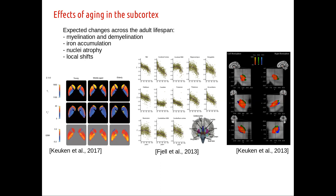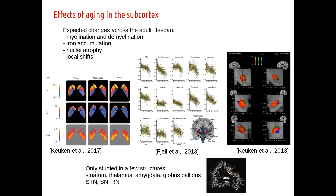From previous studies by our group and others, we know there is active myelination and demyelination across the adult lifespan, iron accumulation particularly important for neurodegenerative diseases, nuclei atrophy with cell death, and — starting with Max Keuken's 2013 paper — systematic local shifts as the brain shrinks with age, meaning the location of the STN for deep brain stimulation changes as well. Previous results, though sometimes using large numbers of people, are usually limited to a small number of structures — typically striatum, thalamus, amygdala, globus pallidus, and sometimes STN, SN, and red nucleus.